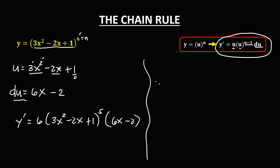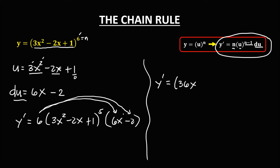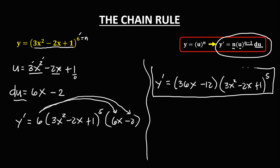Simplifying: y prime equals 6 times (6x minus 2), giving 36x minus 12, times (3x squared minus 2x plus 1) to the power 5. This is the derivative.